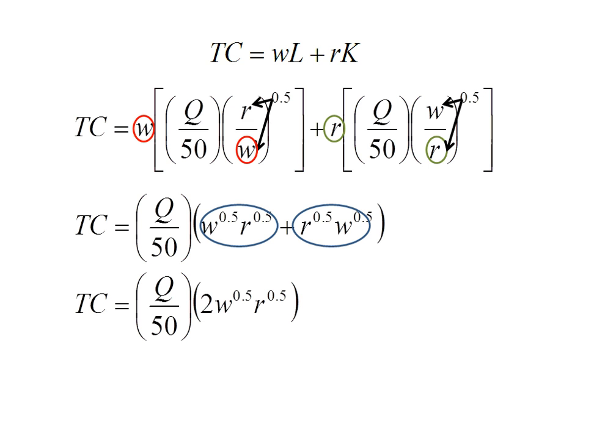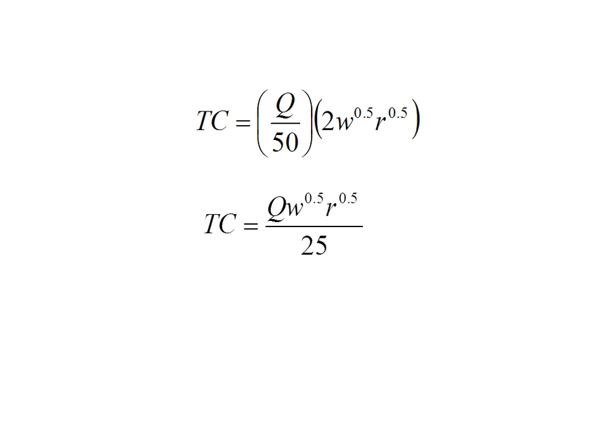So total cost is Q over 50 times 2W to the 0.5 R to the 0.5. That 2 and that 50 simplify to 25 in the denominator, and this is our total cost expression.